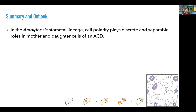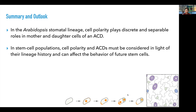In summary, our results show that in the Arabidopsis stomata lineage, cell polarity plays discrete but separate roles in mother and daughter cells of the asymmetric cell division. Specifically, before asymmetric cell division onset, cell polarity controls cell size asymmetry; whereas after asymmetric cell division, cell polarity is important for the separation of daughter cell fate. In addition, the ability to track not only the polarity behavior but also the fate of all surrounding cells gave us the opportunity to identify that cell size asymmetry is important for the self-renewal capacity of the cell not inheriting the polarity crescent. This suggests that in stem cell populations, cell polarity and asymmetric cell division must be considered in light of their lineage history.